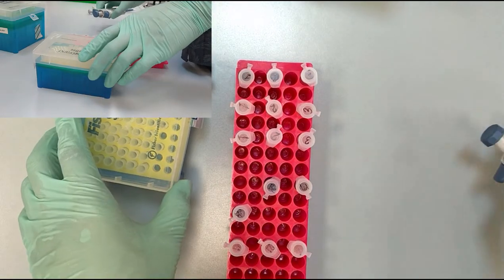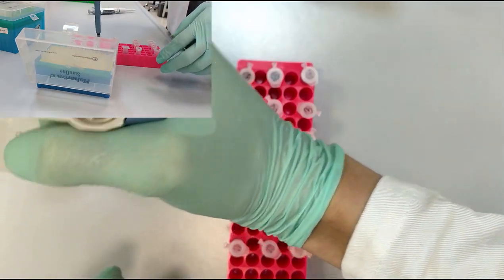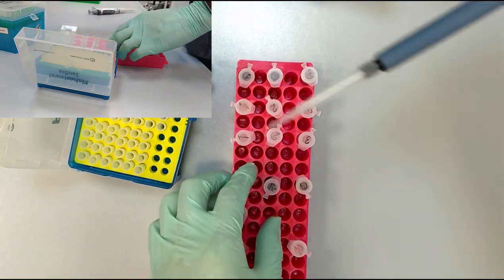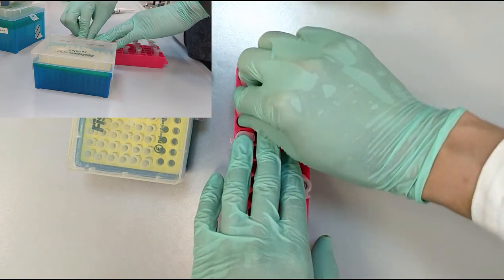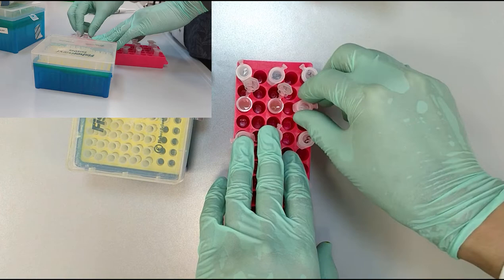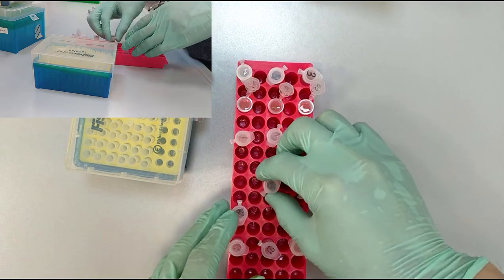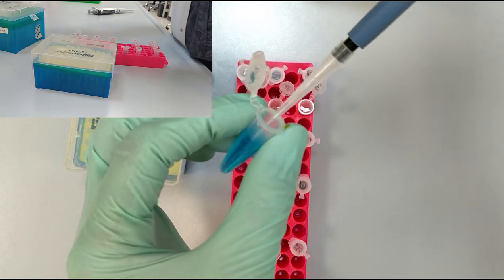So now we are going to do the same stuff for Benedict solution. Again we have the tip on, and we open the second row of the secret solutions. So we take Benedict and start with piping it up and down.